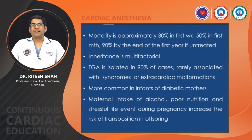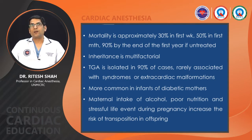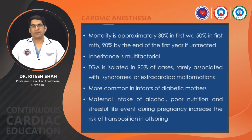Mortality is approximately 30% in the first week, 50% in the first month, and 90% by the end of the first year if untreated. However, with improved diagnostic, medical, and surgical techniques, the overall short-term and mid-term survival rate exceeds 90%. TGA is isolated in 90% of cases and is rarely associated with syndromes or extra-cardiac malformations.